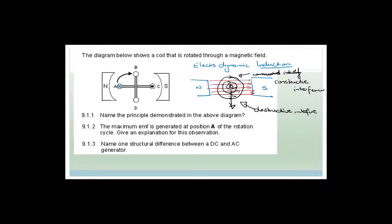Name one structural difference between a DC and AC generator: a DC generator has a split ring commutator, whereas an AC generator has slip rings.